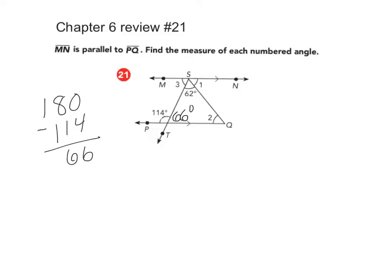I can find angle 3 because the 66 degrees is inside the parallel lines on the alternate side of the transversal. So if this angle is 66, then angle 3, which is alternate interior to 66, is also 66. So that's why I did that one first. The measure of angle 3 equals 66 degrees.